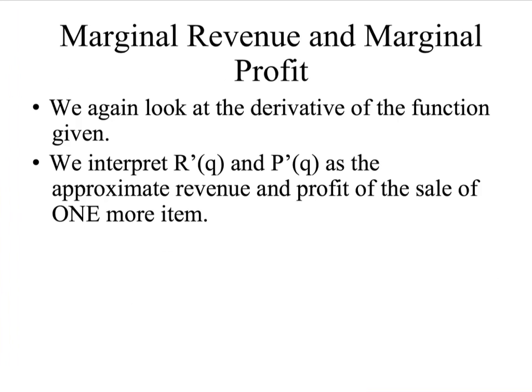Looking at marginal revenue and marginal profit, again we're going to use the derivative of the function. Just like marginal cost meant the cost to produce that one more item, we're going to interpret our marginal revenue and our marginal profit as the approximate revenue and profit of the sale of one more item.